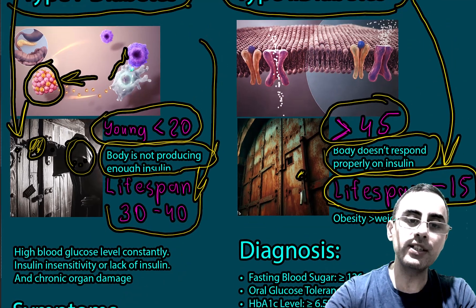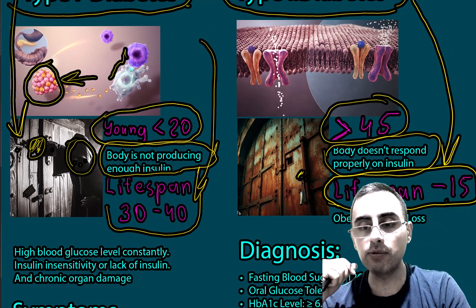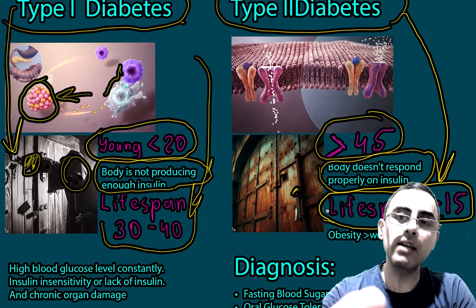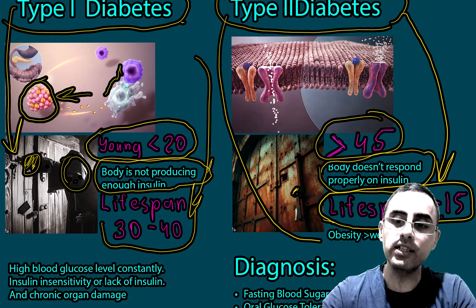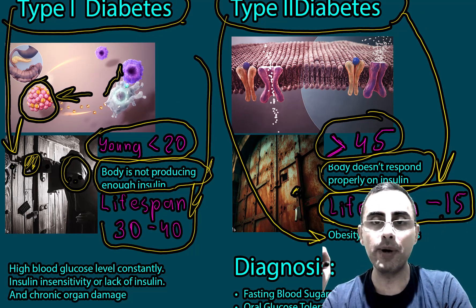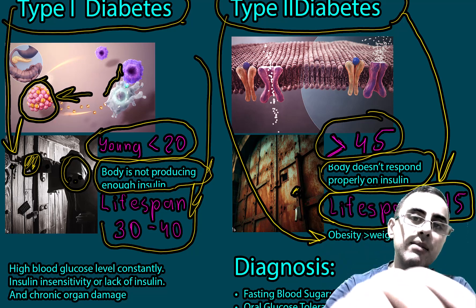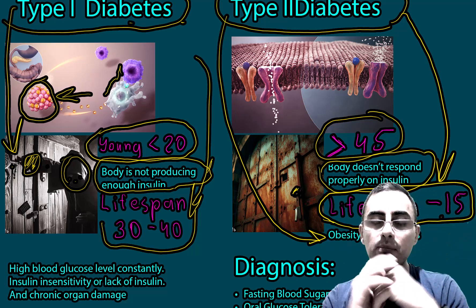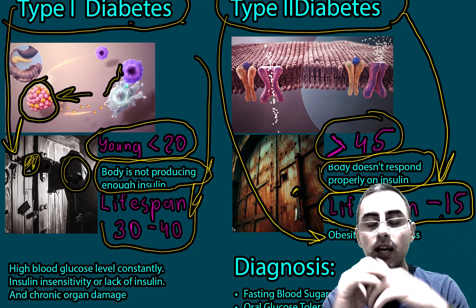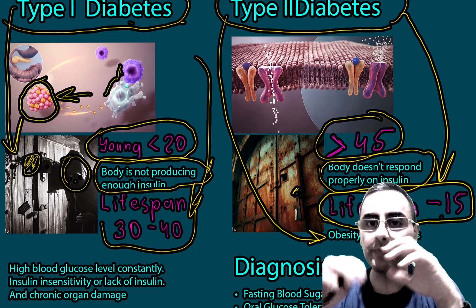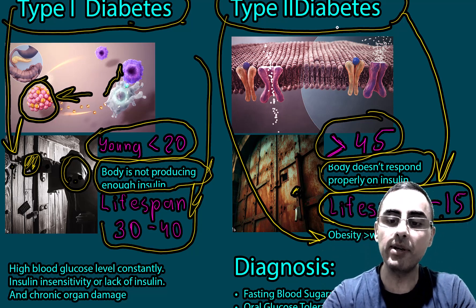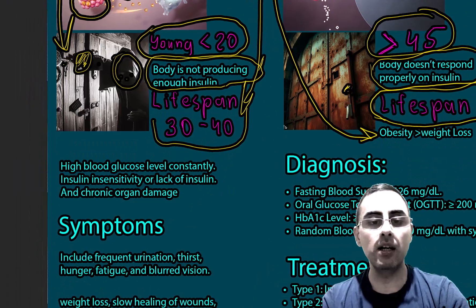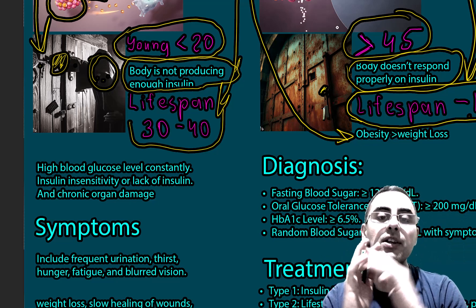A third difference between Type 1 and Type 2 diabetes is obesity. Type 2 diabetes is strongly associated with obesity or overweight, while Type 1 diabetes is not correlated with obesity — a person can be slim or almost any weight.